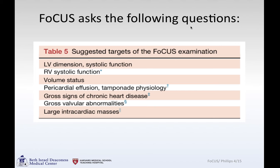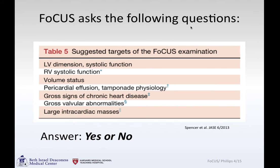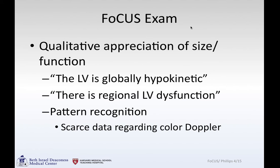You can ask the following questions regarding left ventricular function and dimensions, right ventricular function, volume status, presence of an effusion in the pericardial space, signs of chronic heart disease, valvular issues, or potential large masses. When you're doing this, you're asking yes or no — do these things exist? For example, when looking at the left ventricle, you can comment that it is globally hypokinetic. It's more of a qualitative, not quantitative call — you're getting a sense of function rather than saying the EF is exactly 35%.